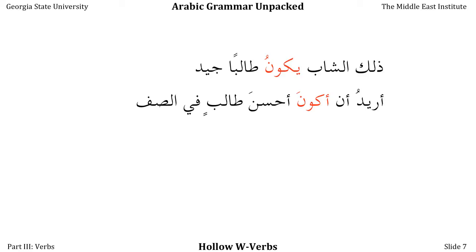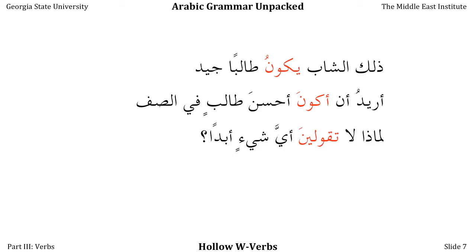Where you'll often see the present tense of KANA is in the MUDARIT MANSOOB after the conjunction EN, after a verb like WANT or LIKE. For example: 'I want to be the best student in the class.' This is really quite a common context. I can also use the verb QALA in the present tense, and people do all the time. For instance: 'They won't say anything to anyone' — لن يقولوا أي شيء لأحد.